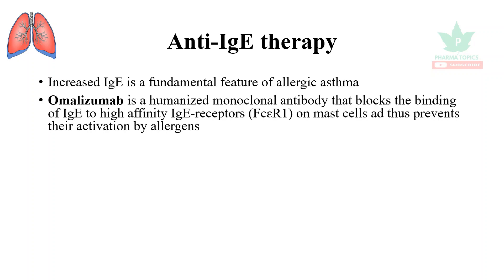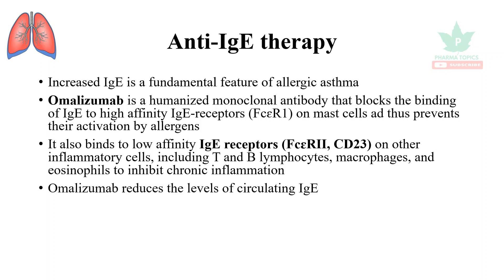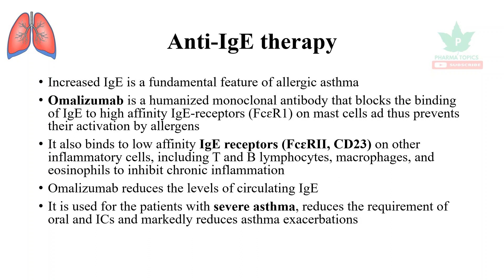Omalizumab is a humanized monoclonal antibody that blocks the binding of IgE to high affinity IgE receptors such as FC epsilon R1 on mast cells, preventing their activation by allergens. It also binds to low affinity IgE receptors FC epsilon R2 and CD23 on other inflammatory cells including T and B lymphocytes, macrophages, and eosinophils to inhibit chronic inflammation. Omalizumab reduces the levels of circulating IgE.